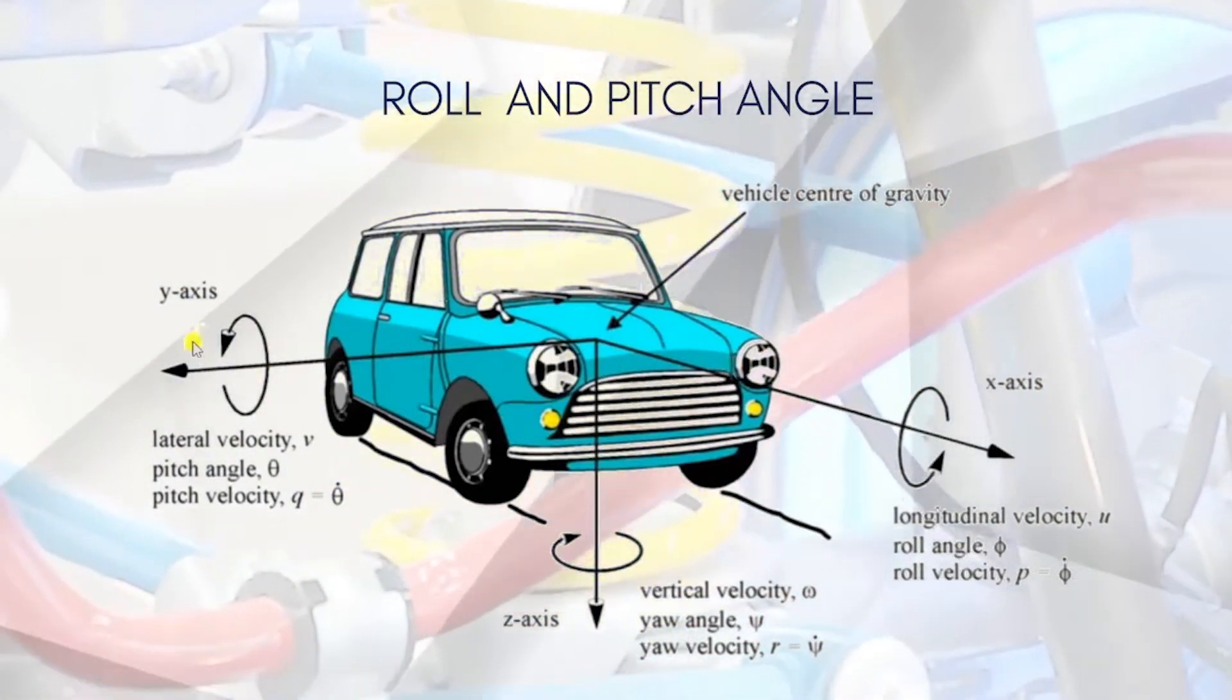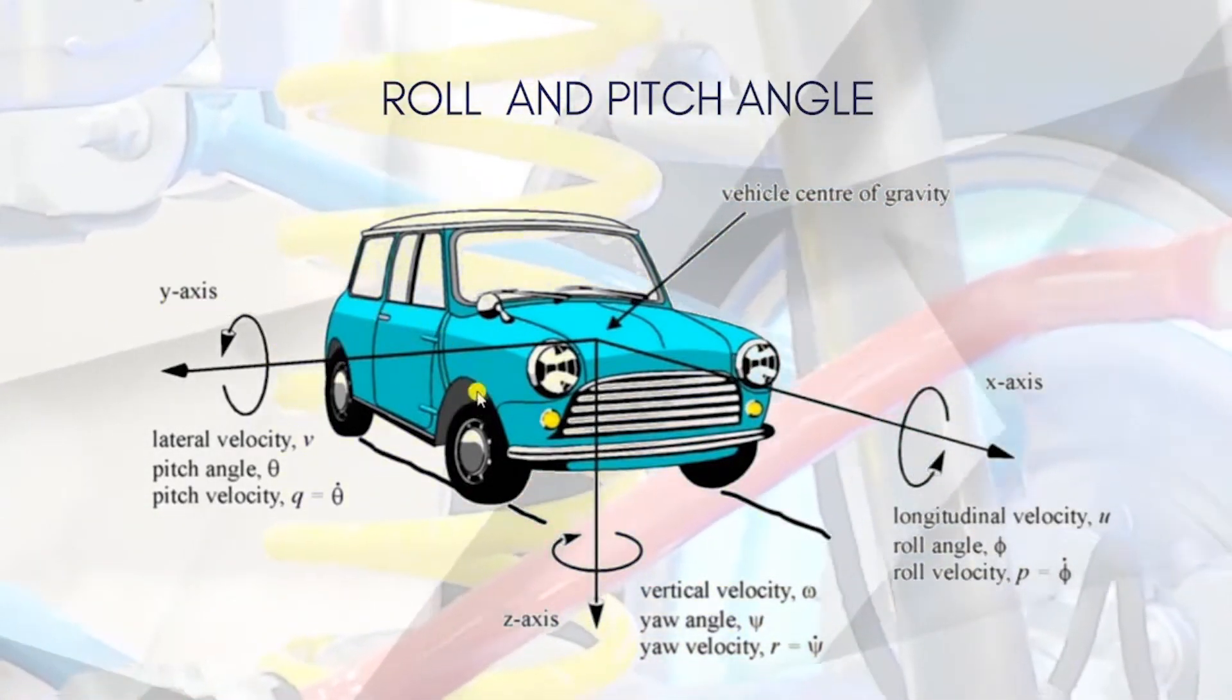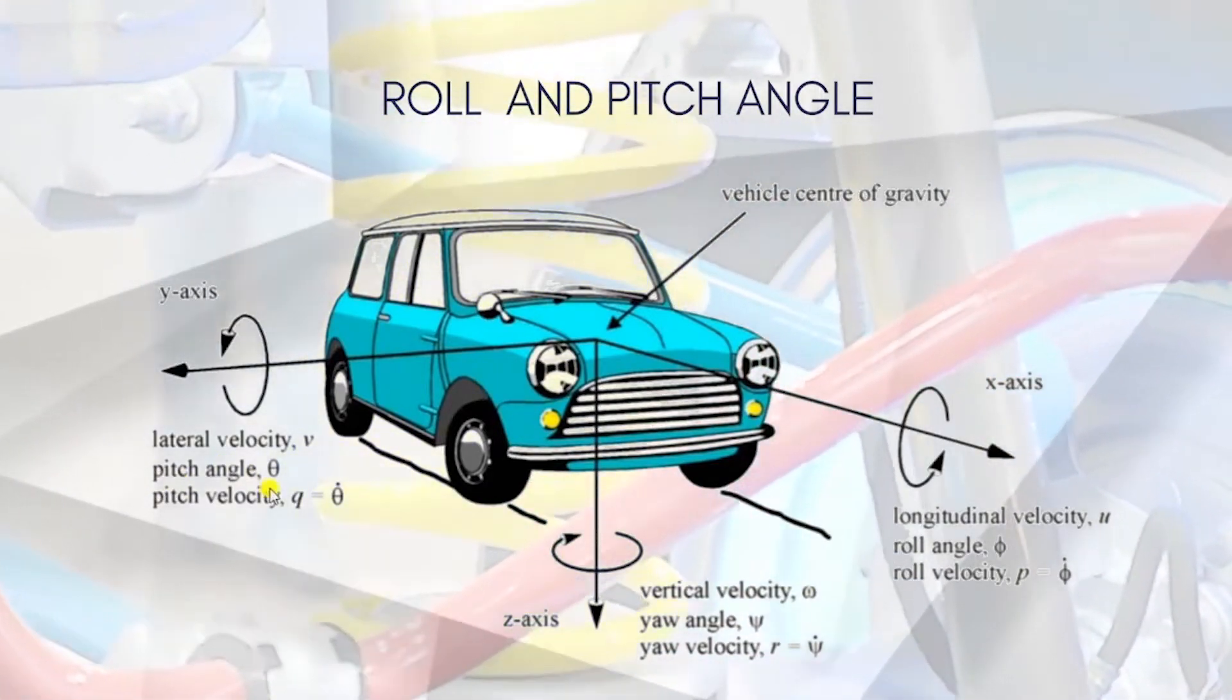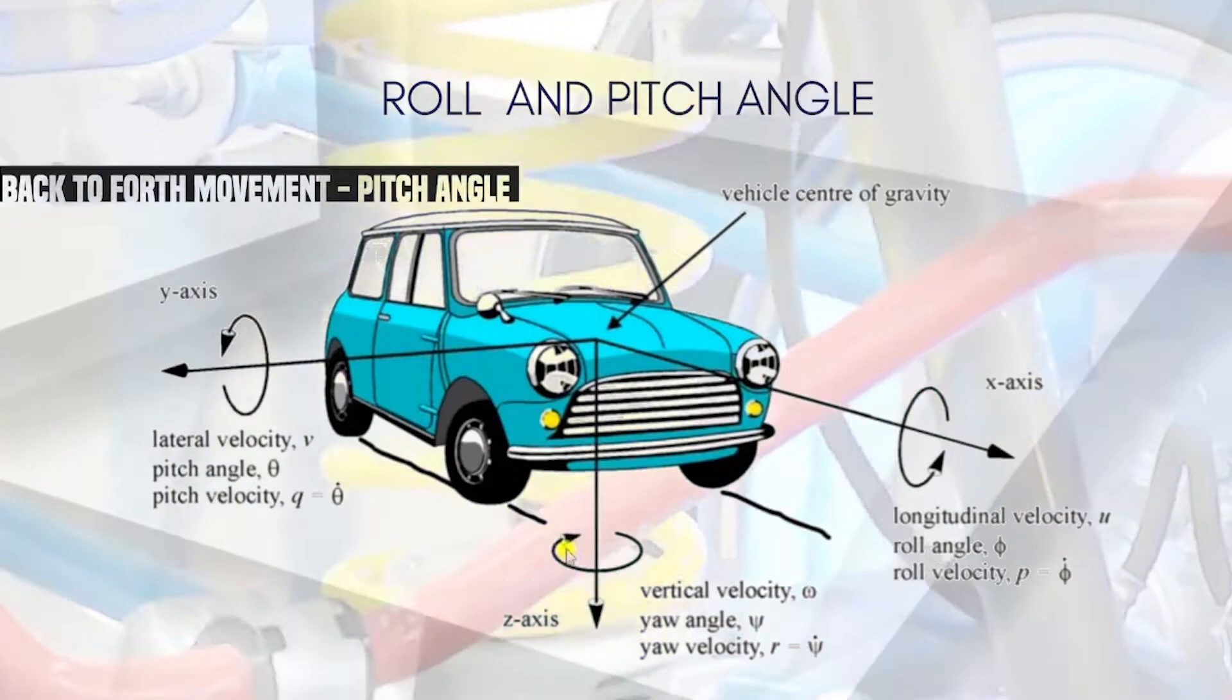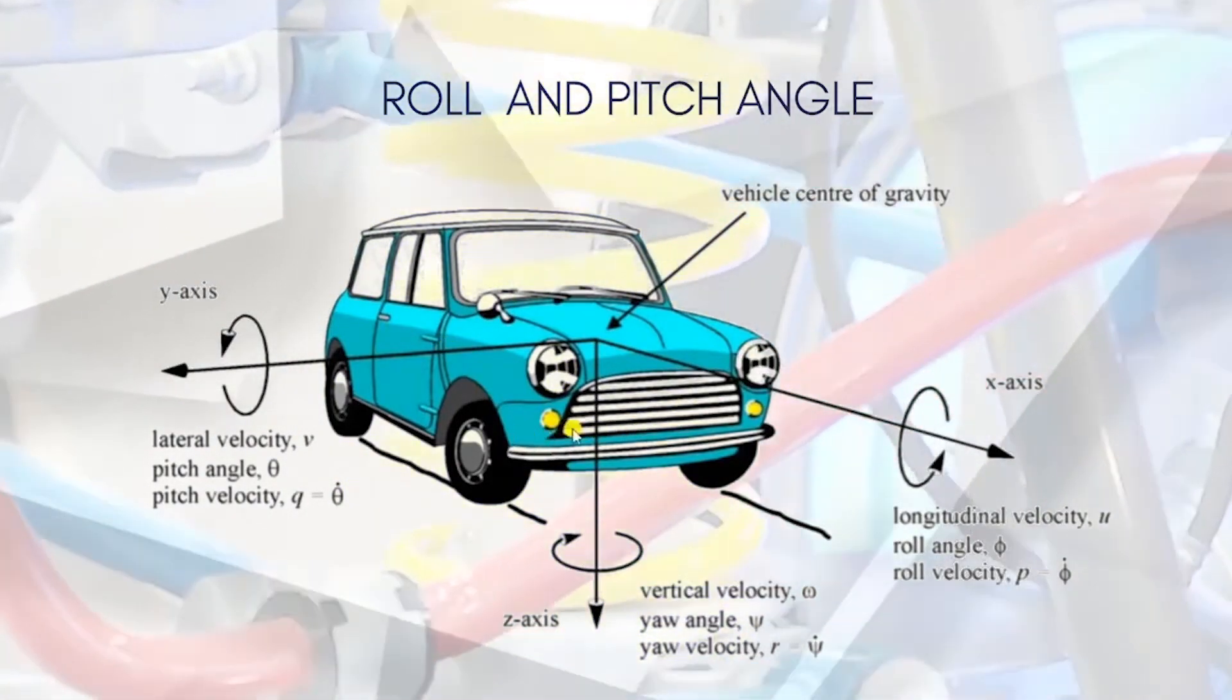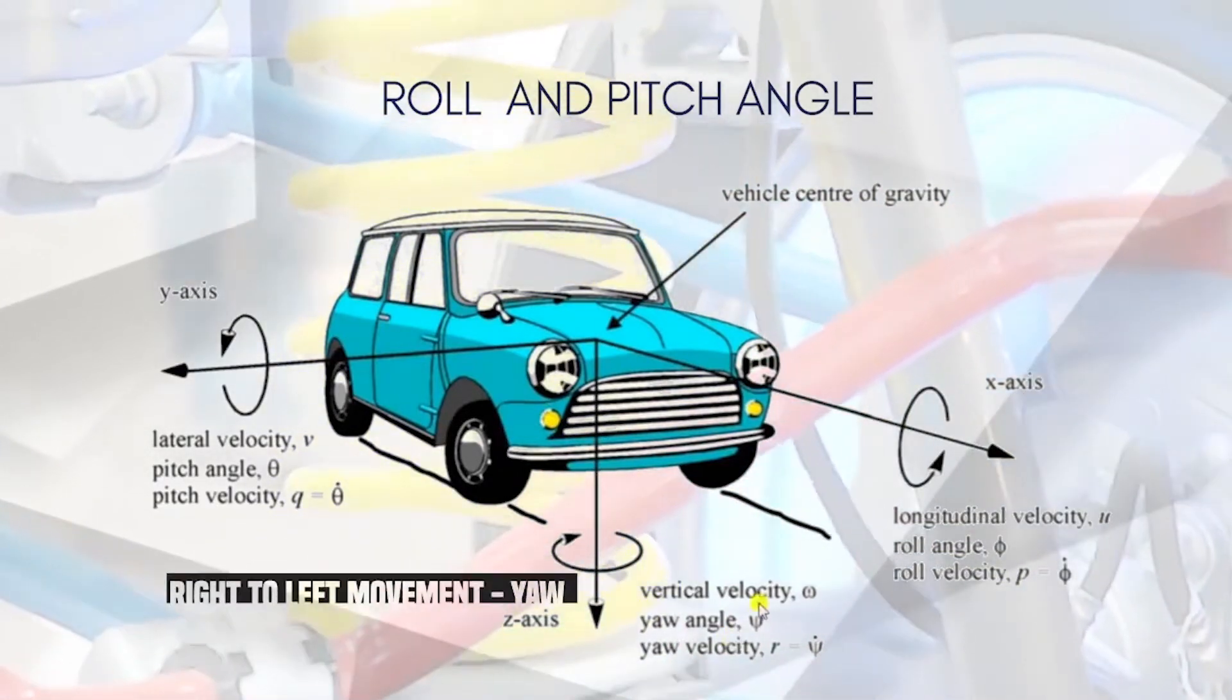If it rotates along the y-axis, like if it moves from back to forth, this angle when your body moves is the pitch angle. And if it rotates along a vertical axis, wherein the front side moves right and left a little bit, that's called the yaw angle.